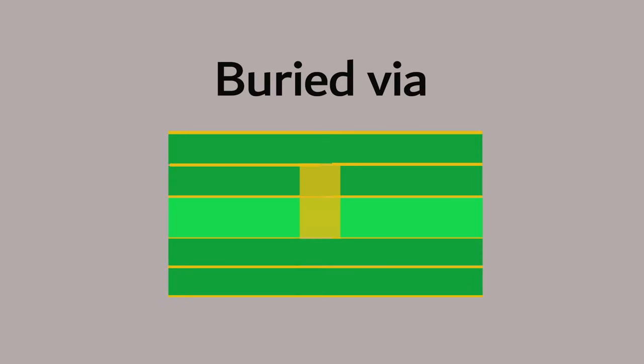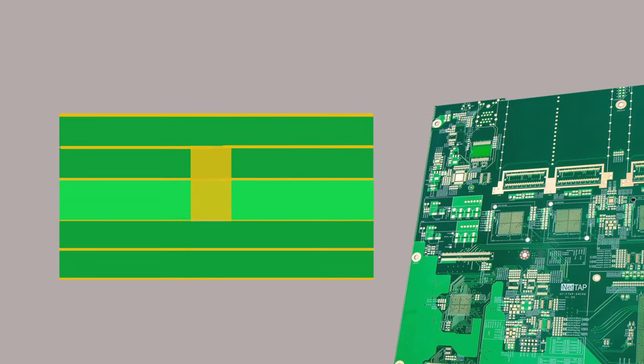A buried via connects at least two inner layers and is not visible on the outer layer. It is designed mainly to connect inner layer signals, which can reduce the chance of signal interference, so are suitable for HDI PCBs.